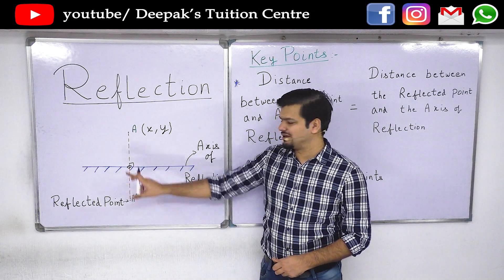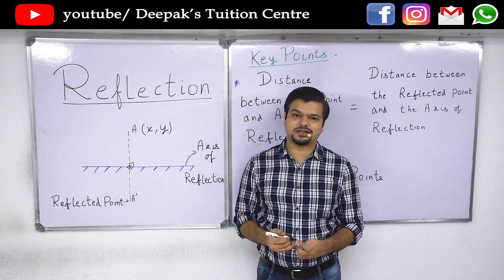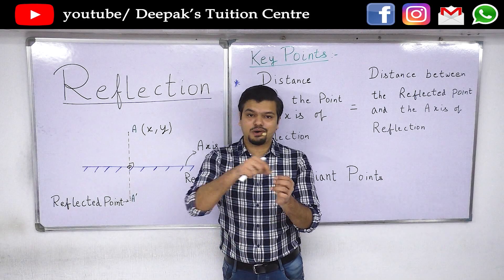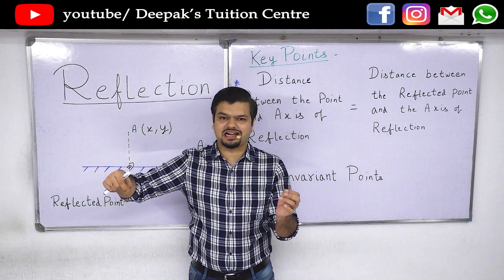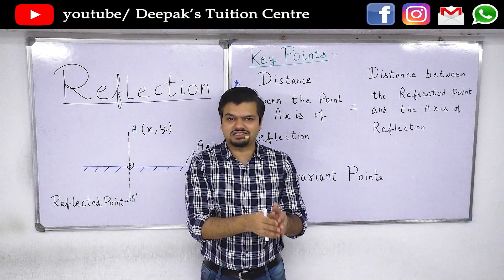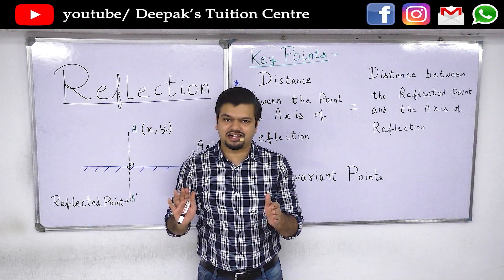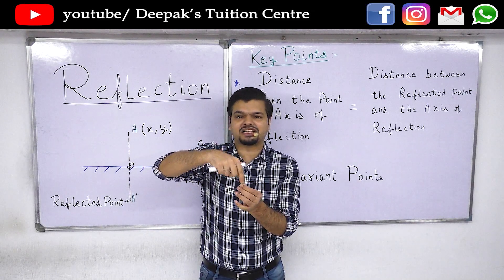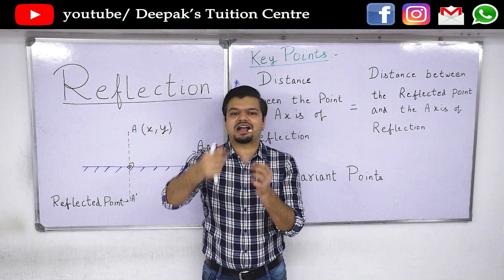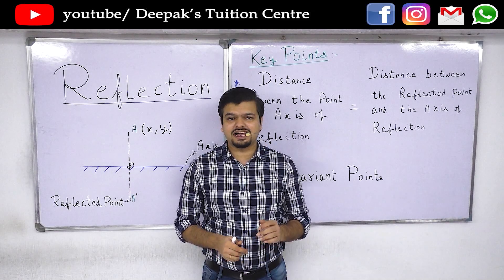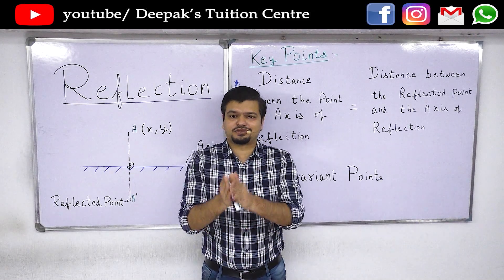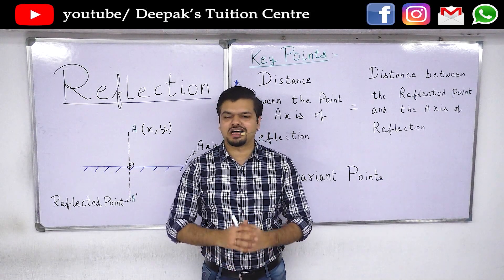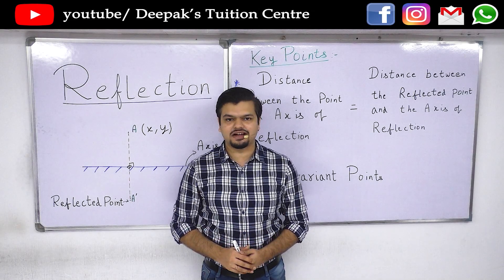So if a point lies on the axis of reflection, it is definitely invariant — meaning after reflection we cannot change it, its coordinates will have no change.